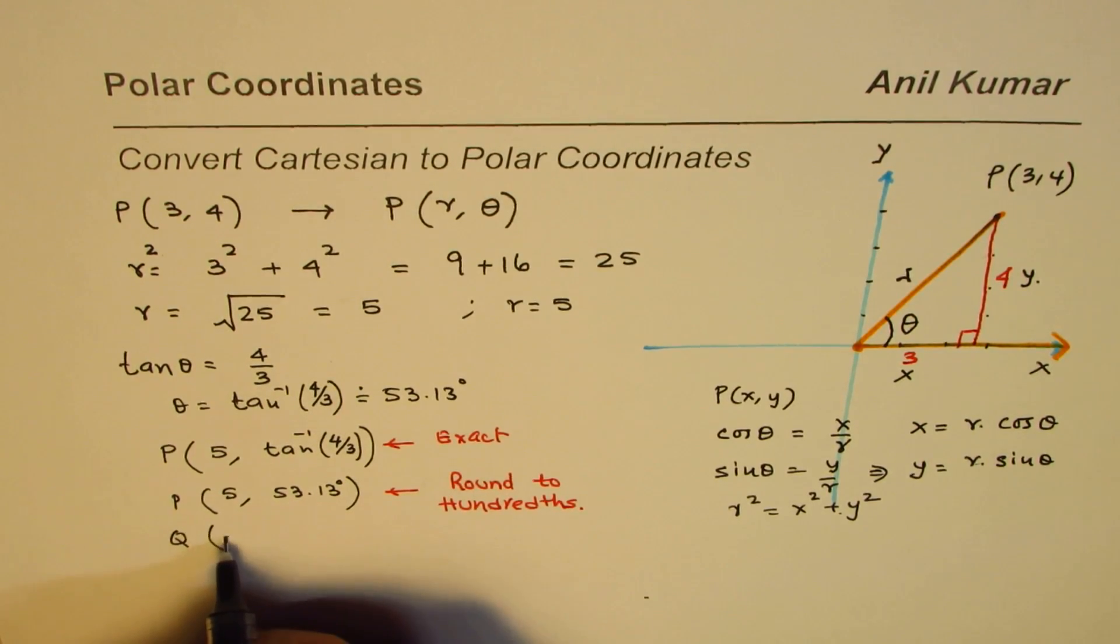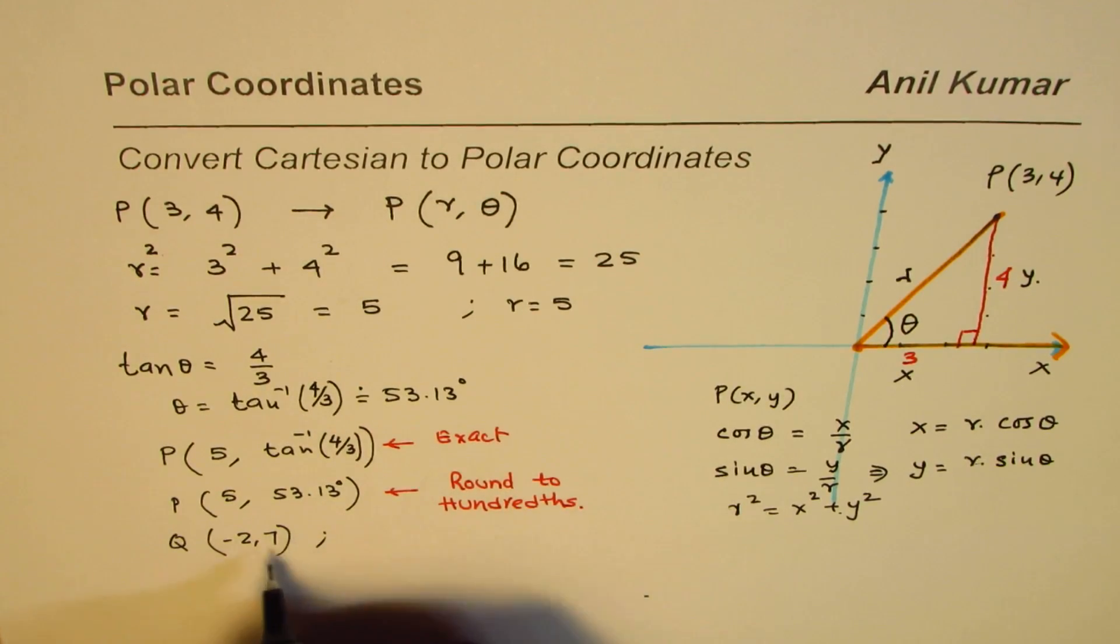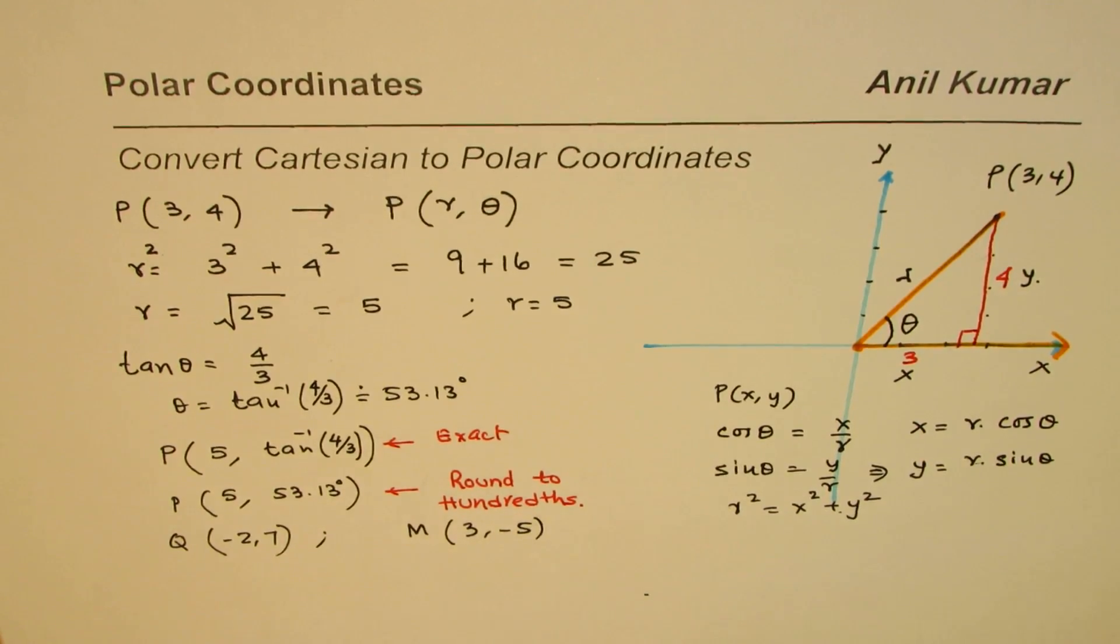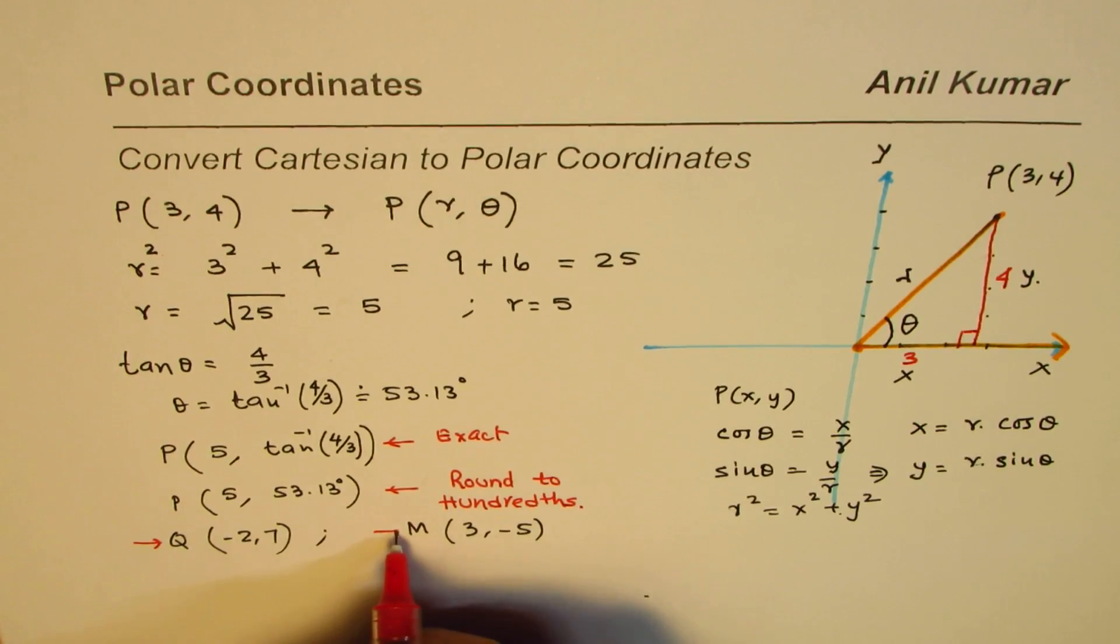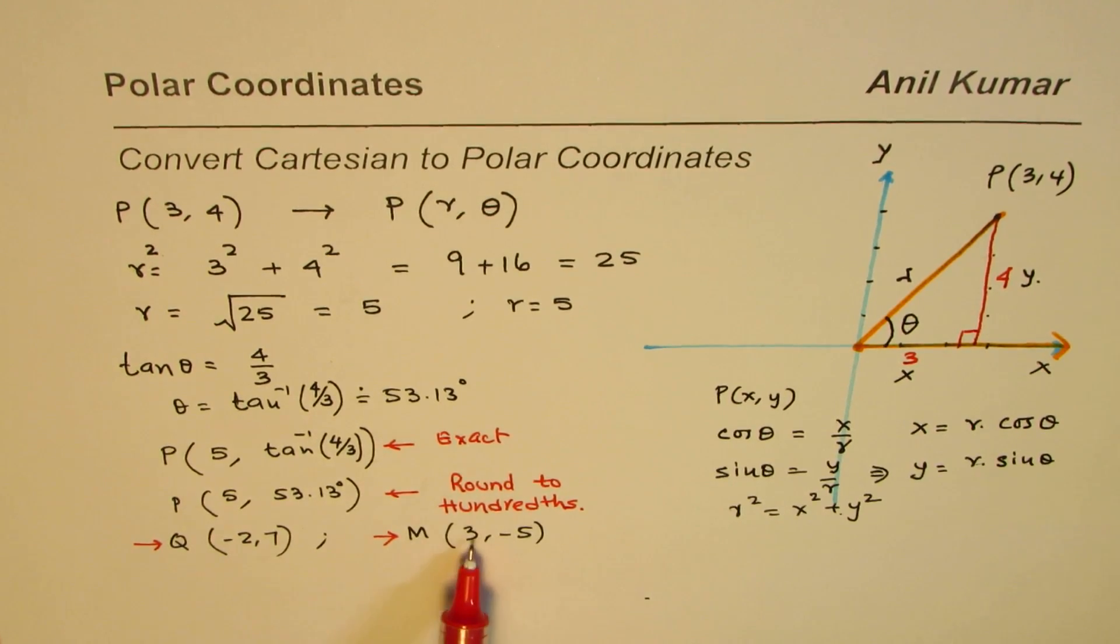And if I have a point, let's say M, which is 3 minus 5. How do we do these points? So these are the questions which we'll look into in another video. So how do we represent negative r value and 3? Because that may become slightly tricky. So let's look into that in the coming videos.